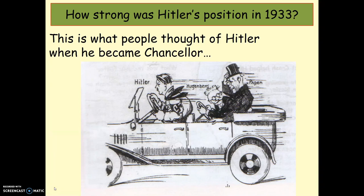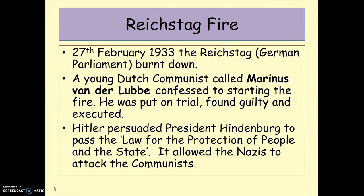When Hitler became the leader of Germany, many leading people within Germany — people like Franz von Papen — thought that they could control Hitler and be more powerful than him. As this cartoon shows, although Hitler would think he was in the driving seat, they believed they would be the ones actually directing Germany. But they were very, very wrong. One of the first events that really helped Hitler become a dictator was the fact that in February 1933, the German parliament was set on fire and burnt down.